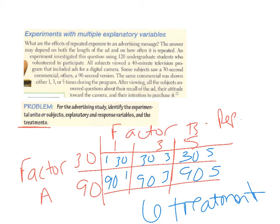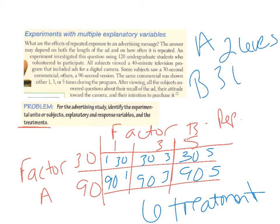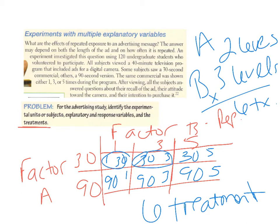When you have multiple explanatory variables, multiply the number of levels for each factor to find the number of treatment groups. Factor A had two levels and Factor B had three levels, so 2 times 3 equals six treatment groups. You would list all six treatment groups: the one 30-second commercial, a 30-second commercial three times, a 30-second commercial five times, and the same three for the 90-second commercial — one time, three times, and five times.